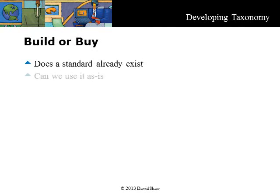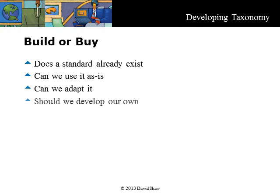Once the business need is understood, a build or buy decision can be made based on criteria such as these: Does a standard already exist? Can we use it as is? Can we adapt it at low cost? Or should we develop our own? Every case is different, but in general a standard should be used as is. Some users are probably already familiar with the standard and changing it in any way will cause confusion. Maintenance of an adapted version may be difficult and expensive if the standard changes. If the adaptation is extensive, the effort involved may be as much or more than developing a purpose-built taxonomy.